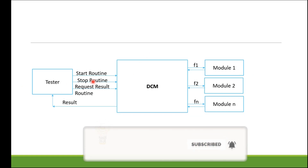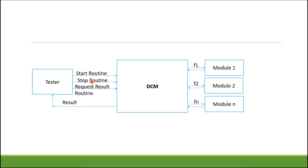Once the routine is started, DCM sends a positive response back to the tester. The same applies for stop routine — if the tester wants to stop a particular routine, the tester requests stop routine, DCM validates and stops that action, then sends a response. For the Request Routine Result sub-function, if you want to know the status of the routine, the tester sends this sub-function 03, DCM queries the module, and sends back the response.